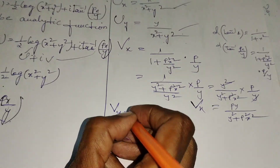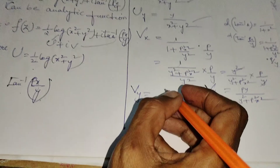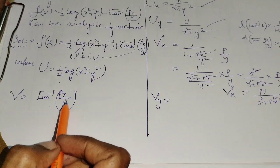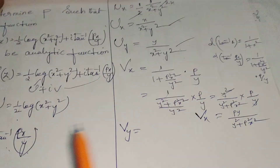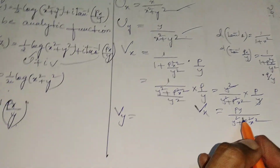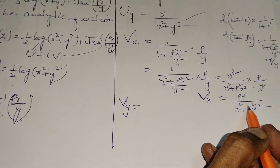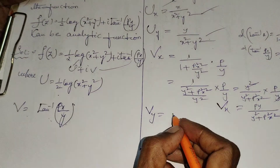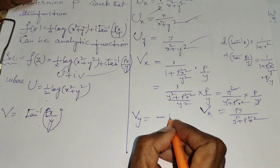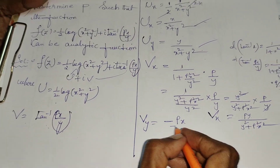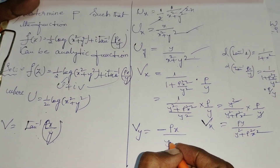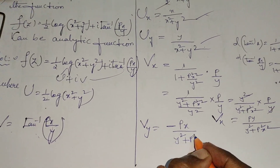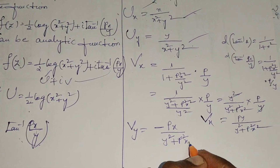For vy, differentiating v with respect to y, we get vy = −Px/(y² + P²x²).